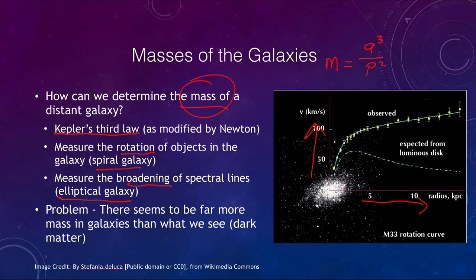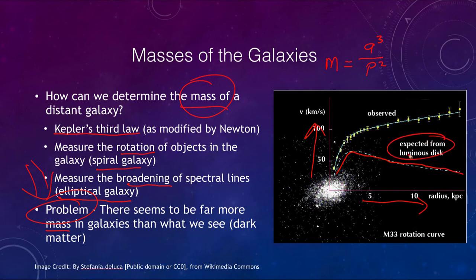In each case, we find a problem: there seems to be far more mass in galaxies than we actually see. The graph here for this galaxy shows the rotation curve we expect based on the visible galaxy. What we actually observe is that the rotation curve continues to rise. That means there must be a lot of matter not visible to us — not just the luminous matter like stars, nebulae, gas, and other materials we see, but a lot of dark matter as well.